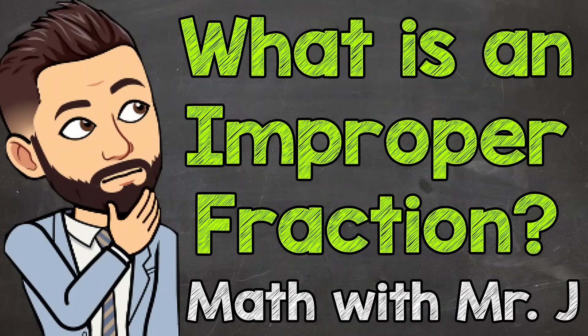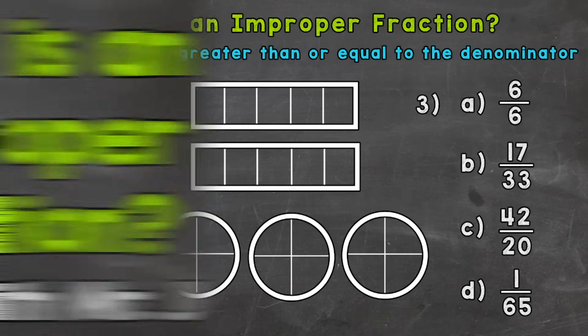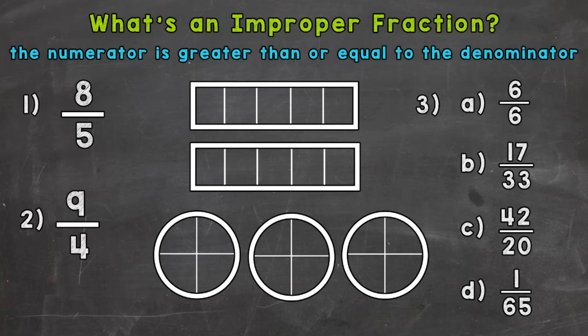Welcome to Math with Mr. J. In this video, I'm going to cover improper fractions and what they are. When it comes to improper fractions, these are fractions where the numerator is greater than or equal to the denominator. So the top number is greater than or equal to the bottom number. Improper fractions hold a value equal to or greater than a whole. So let's jump into a few examples here to help us better understand improper fractions.